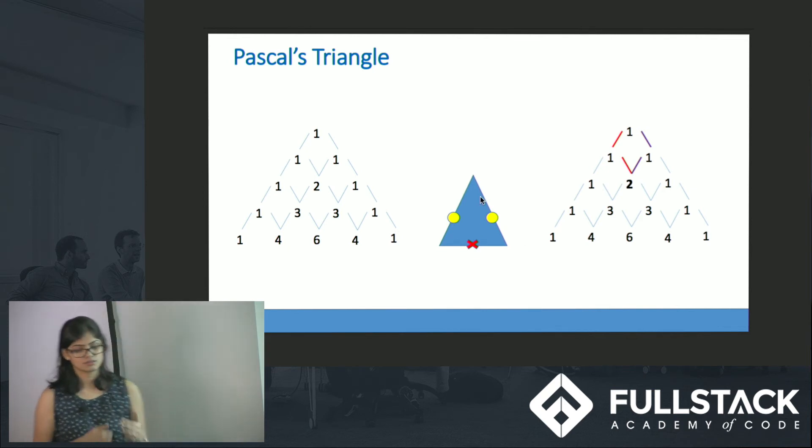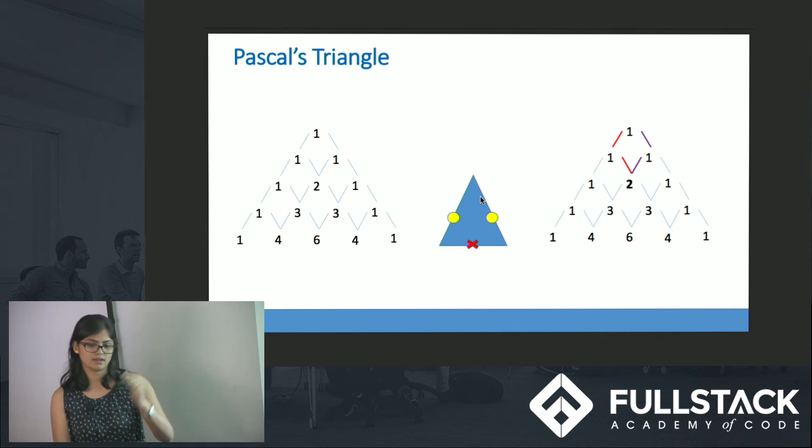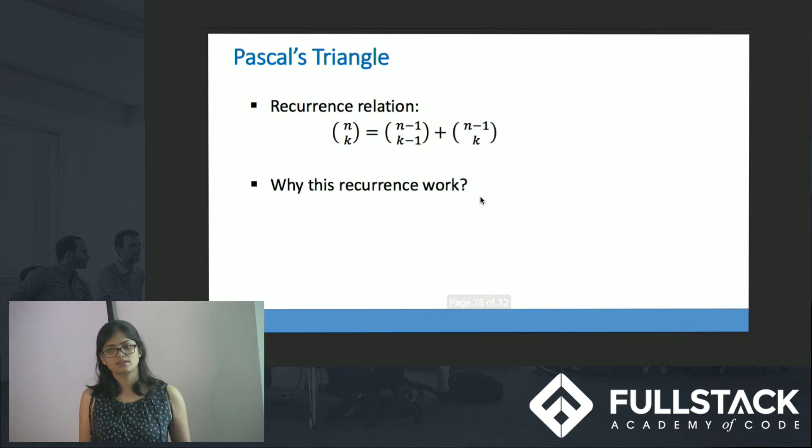This is essentially a recursive algorithm. I am using the previously computed two values in order to find current value. Let us look at the recurrence relation for this. The recurrence relation would be (n minus 1) choose (k minus 1) plus (n minus 1) choose k. Why do you think this recurrence work?